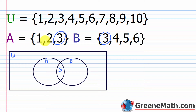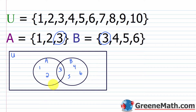For set A, elements 1 and 2 are not common to B, so they go outside of the overlap. For set B, elements 4, 5, and 6 go outside of the overlap as well. Elements that are part of the universal set but not part of A or B — that's 7, 8, 9, and 10 — go somewhere inside the rectangle but outside of both circles.